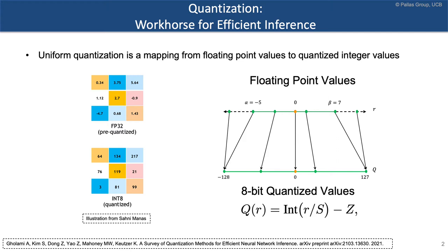How does quantization work? It's essentially a mapping between floating point values in the real line to integer values. The formula is a simple operation: you take your real value, divide it by the number of partitions, perform a rounding operation, and then subtract an integer to make sure that the zero point is exactly represented.